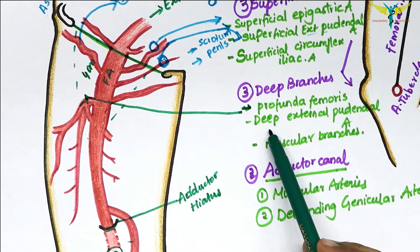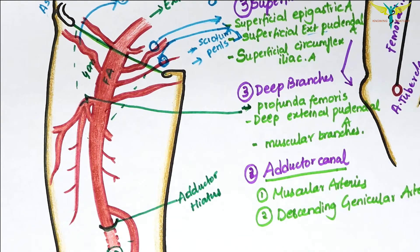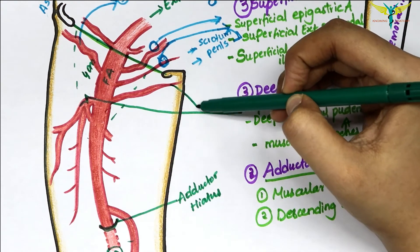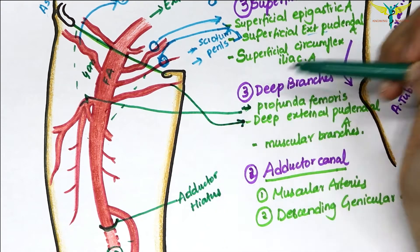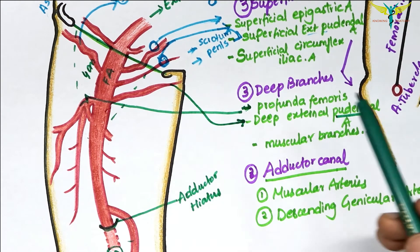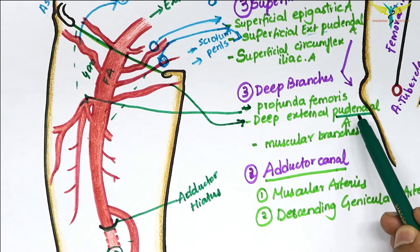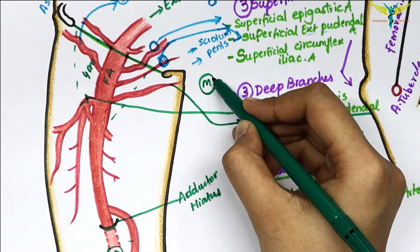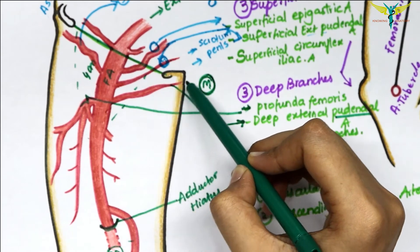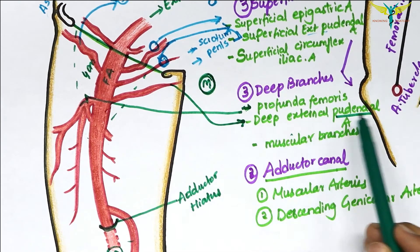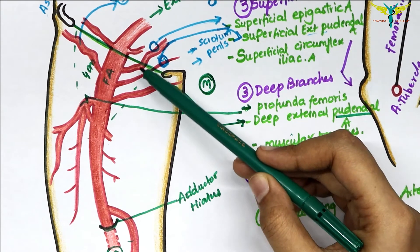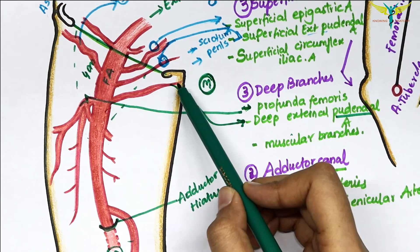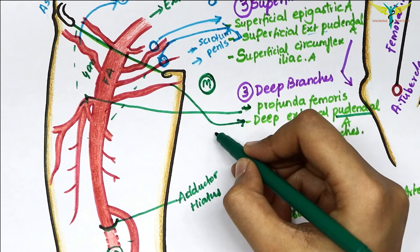The next deep branch is the deep external pudendal artery, which arises just below the superficial external pudendal artery. The term 'pudendal' refers to the genitals, indicating its supply to that area, which lies on the medial side of the body. This artery passes medially, deep to the spermatic cord and the round ligament of the uterus, and then supplies the scrotum.